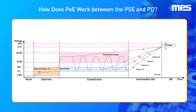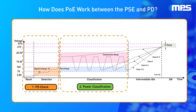So how does PoE work between the PSE and PD? First, there is a PD check. The PSE sends a test voltage of less than 10.1 volts to the PD resistor, which is 24.9 kilo ohms. If the impedance matches, this confirms that it's a standard PoE device. Next is the power classification. After the PD is detected, the PSE sends power to the PD and gets current feedback to confirm the power level, from class 1 to class 8.